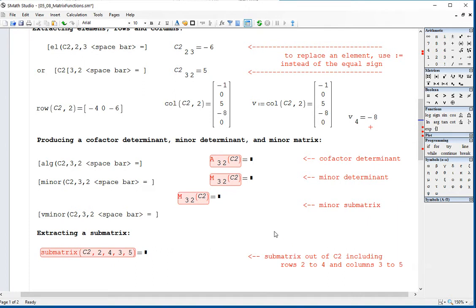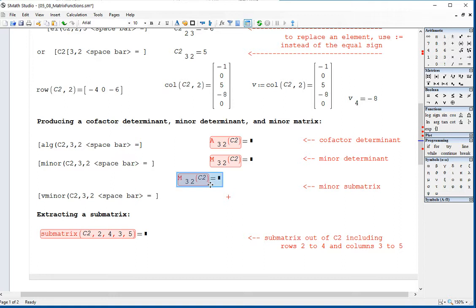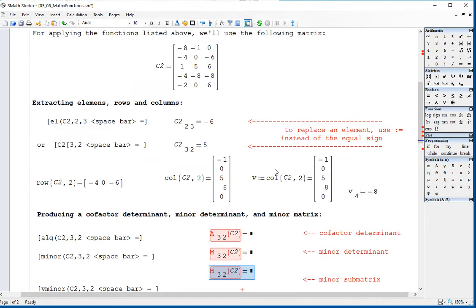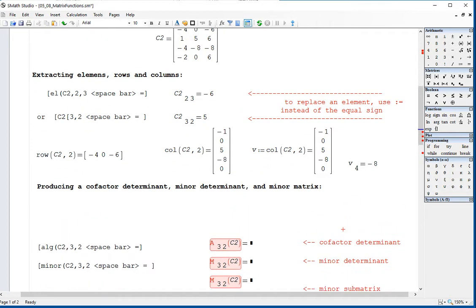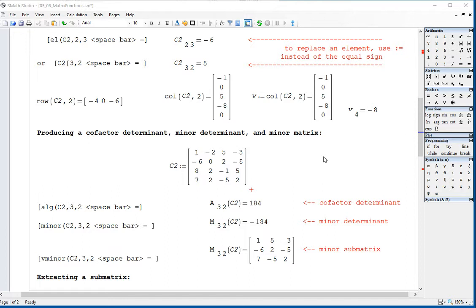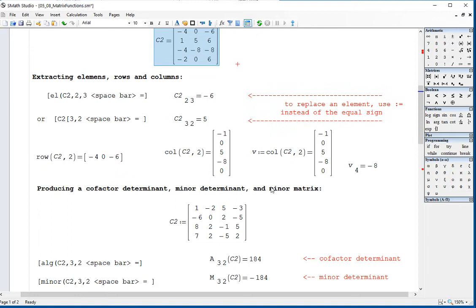Cofactor, determinant, and submatrix work with square matrices only. Okay, so I'm going to produce or redefine my C2 right here. I have redefined the matrix C2, originally I had it with five rows, three columns, with different elements in a 4x4.